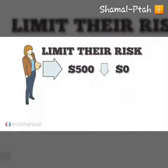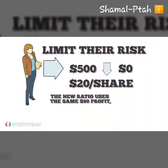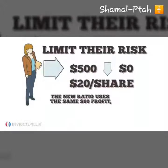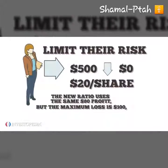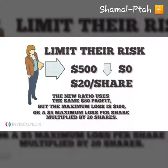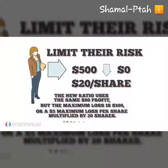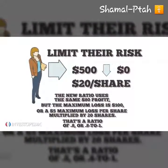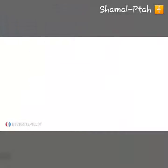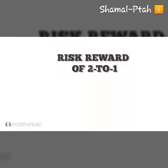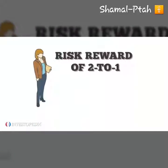Say the stop-loss is set at $20 per share. The new ratio uses the same $80 profit, but the maximum loss is $100 — a $5 maximum loss per share multiplied by 20 shares — giving a ratio of 0.8 to 1. A risk-reward ratio of 2 to 1 is what many investors demand before they'll consider an investment.